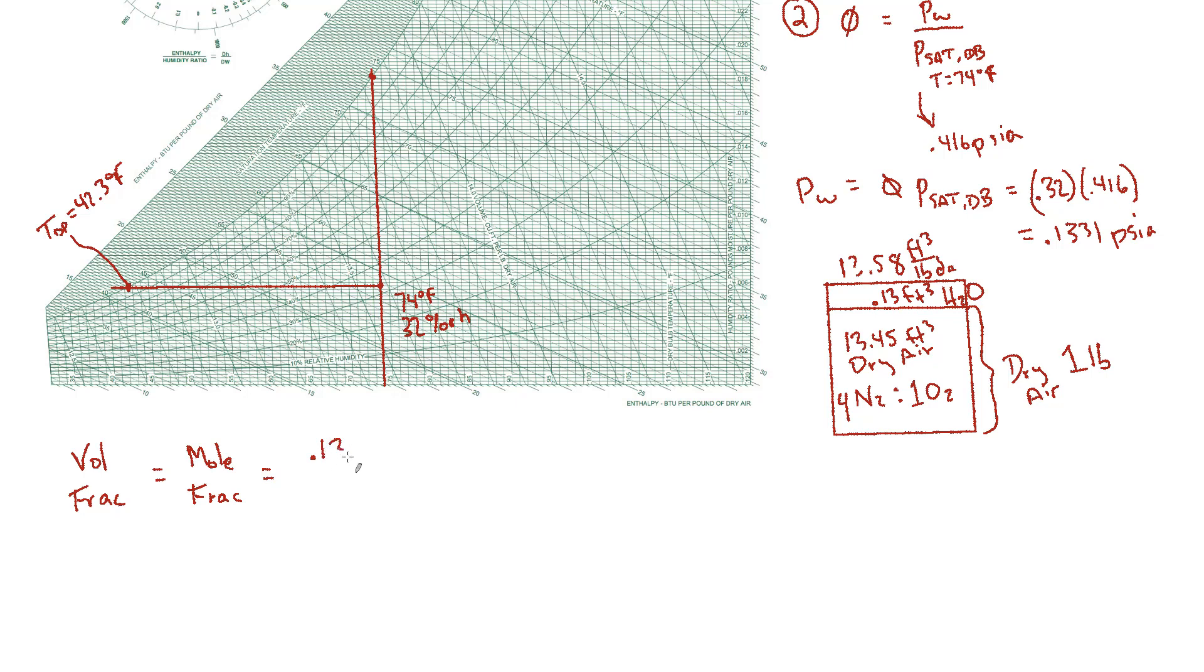So let's see what the contribution of water vapor is in this mixture. Well, it's 0.13 of the total cubic feet is the volume of the water vapor in that mixture. And what's the total volume of the mixture? 13.58. What is that as a percentage? That turns out to be about 0.96%. So just under 1% of the mixture by volume and by moles is water vapor, which means that water vapor is responsible for 1% of the total pressure.